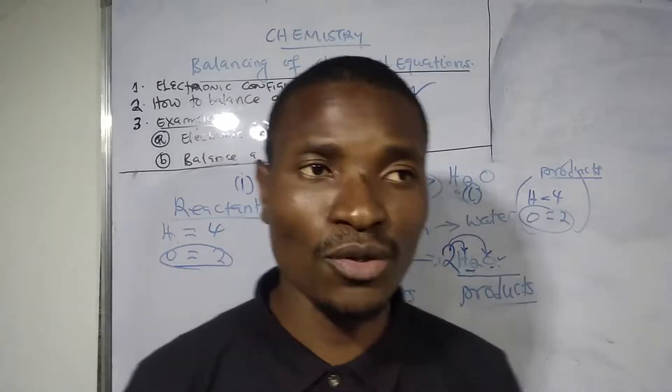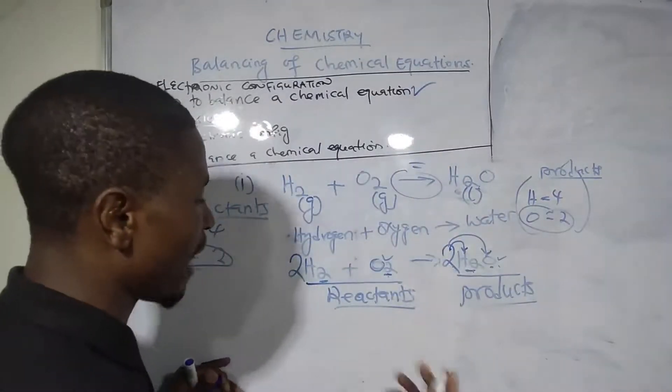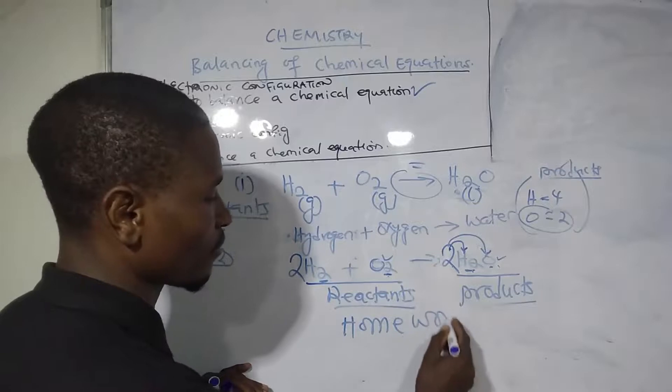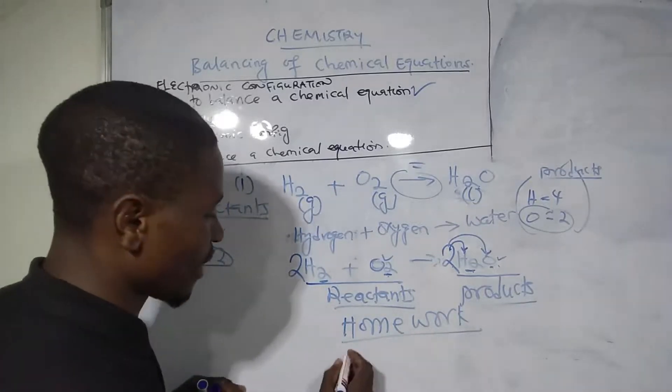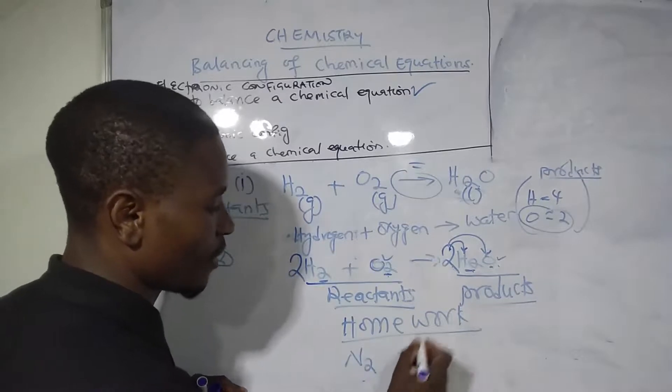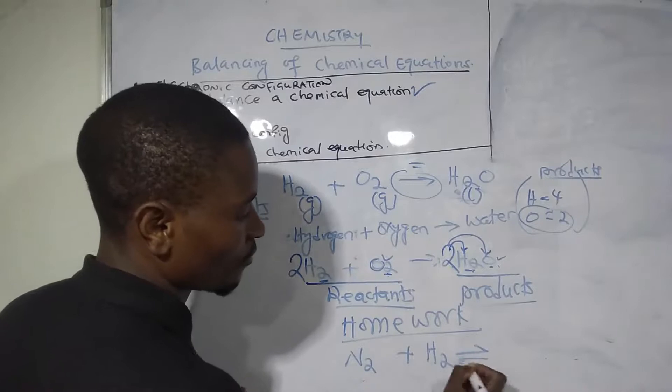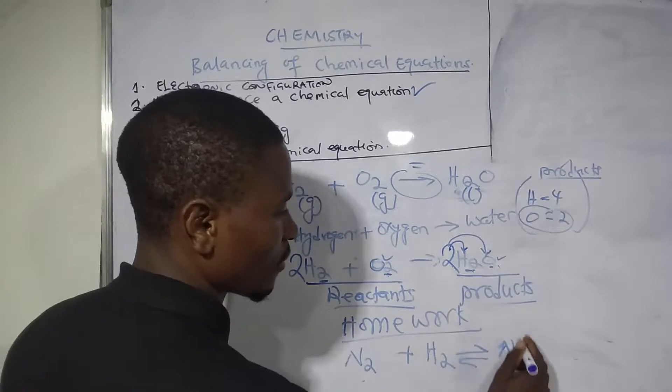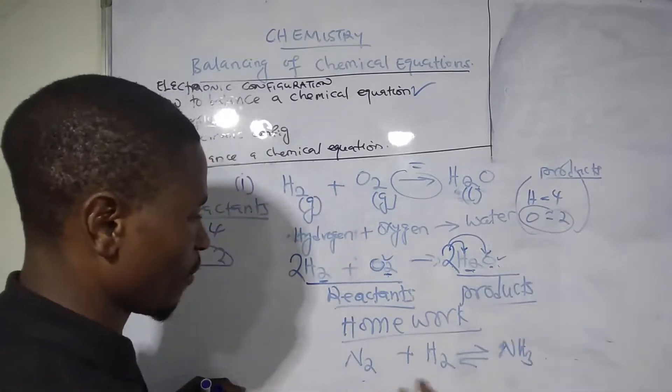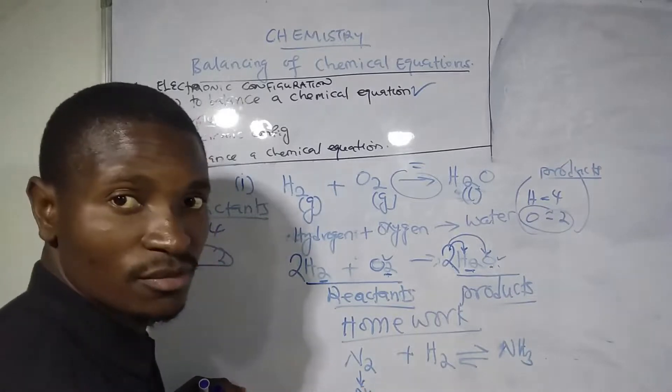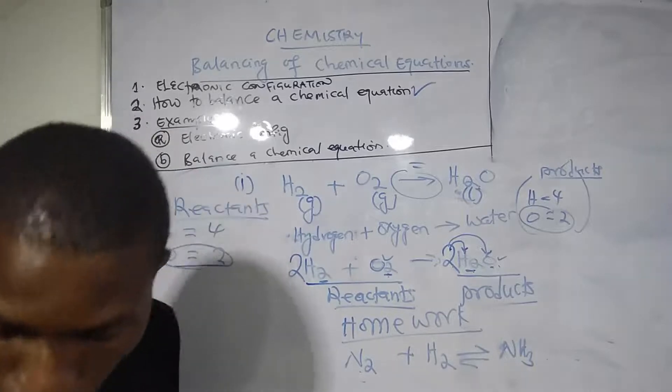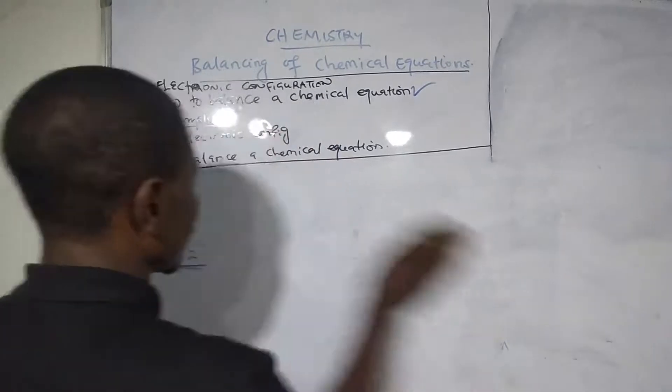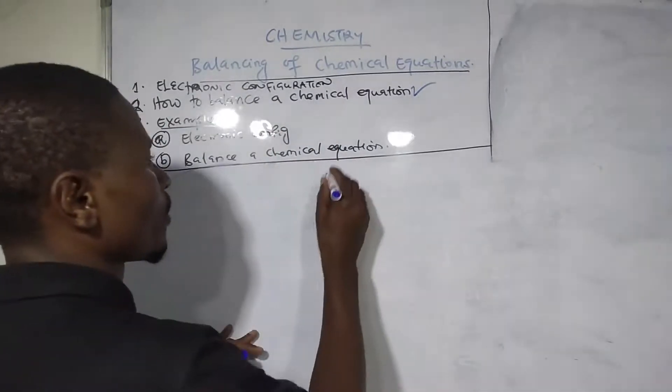That's it for this video on balancing chemical equations. I believe you'll learn one or two things. Before I leave you, I'll give you something to balance for practice. This is the homework. I want you to balance this one: nitrogen plus hydrogen equals NH3.